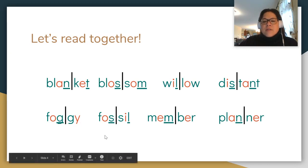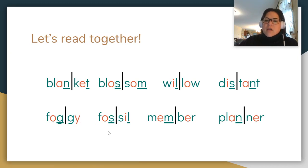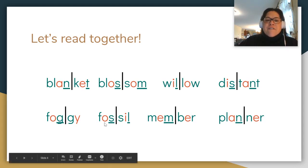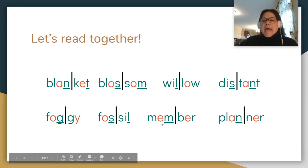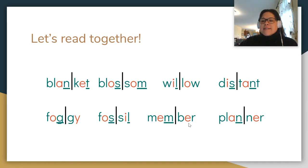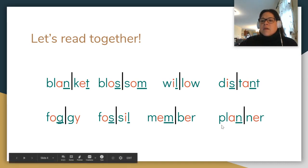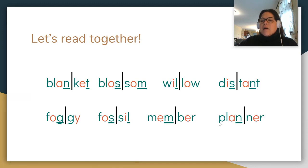Next one — you decide: closed or not closed based on whether I have some underlines. Ready? 'Fos' — 'sil' — 'fossil.' Great. Next one: 'em' — 'blem' — fantastic. And the next one: 'plan' — 'ner' — 'planner.' Excellent.